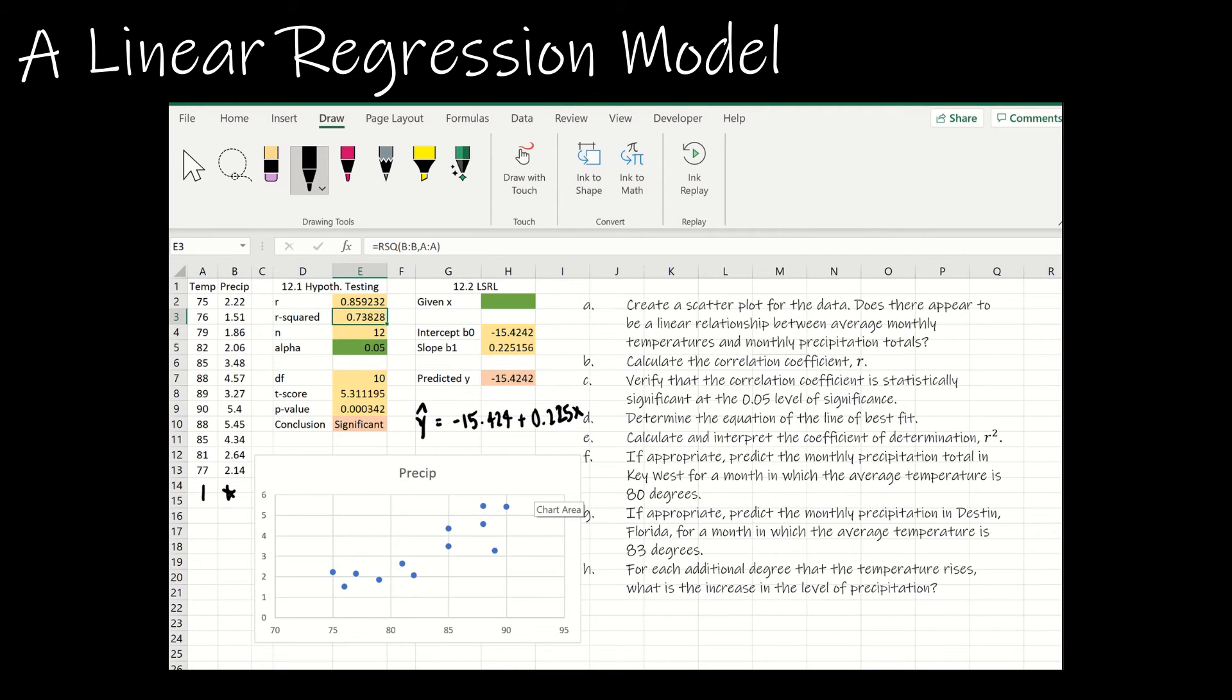If appropriate, predict the monthly precipitation total in Key West for a month in which the average temperature is 80. So 80 does fall in this range and it's for the same area because my data was from Key West. So all I have to do is plug in 80 and find the predicted value.